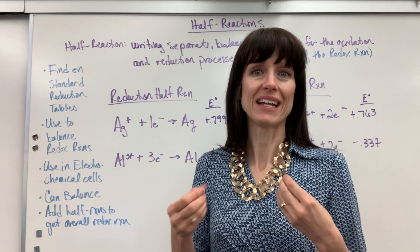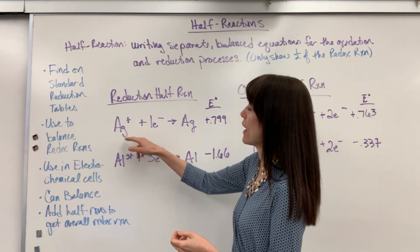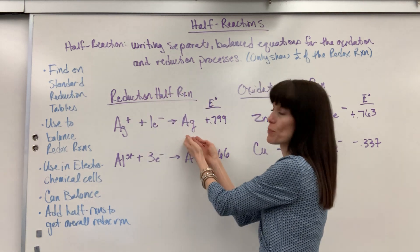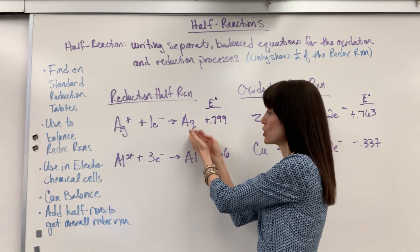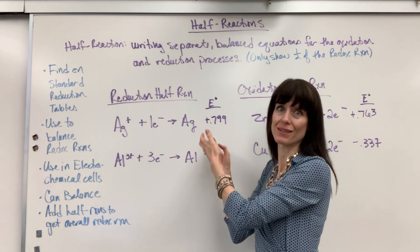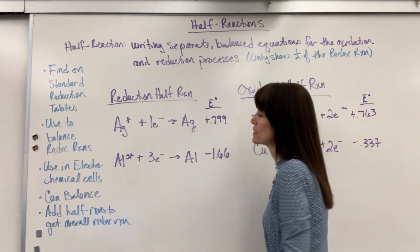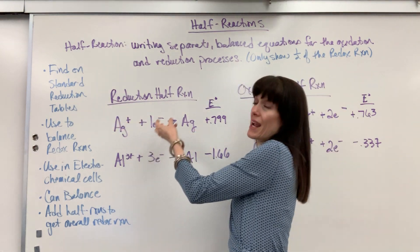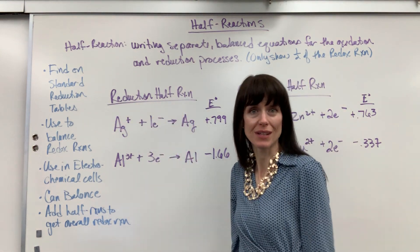Reduction half reactions gain electrons. And so, you have your species, it has to gain electrons to become this product with a changed oxidation number showing it gained electrons. So for reduction, you always write the electrons on the reactant side, because it's going to gain, that species will gain, those electrons.